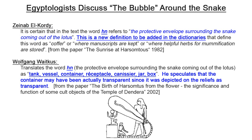Translators of the text emphasize several key points. Egyptologist Zainab Balboudi states it is certain in the text that the word 'hen' refers to the protective envelope surrounding the snake coming out of the lotus — a new definition to be added to dictionaries that previously defined 'hen' only as a coffer or storage container, as noted in a 1982 paper. Then 20 years later in 2002, Wolfgang Waitkus translates 'hen' as a tank, vessel, container, receptacle, canister, or box, and speculates the container may have actually been transparent since ancient Egyptians depicted it as transparent in all of their reliefs.